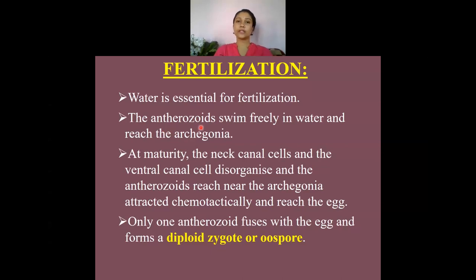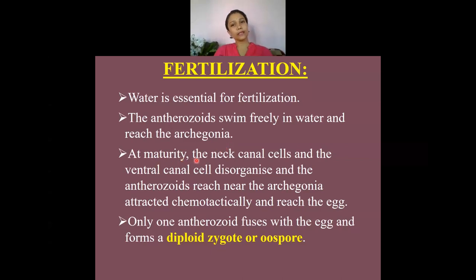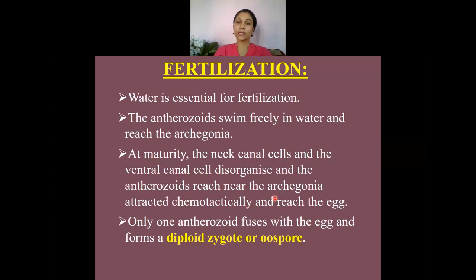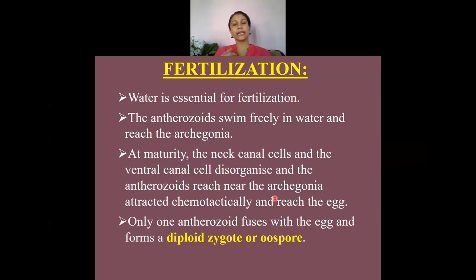When the sex organs mature, fertilization takes place, and water is essential to complete this process. The anterozoids swim through water to reach the archegonium. When the archegonium matures, the neck canal cells and ventral canal cells disorganize, forming a passage through which the anterozoids reach and unite with the egg, completing fertilization. The final product is a diploid zygote or oospore, marking the beginning of the sporophytic generation.